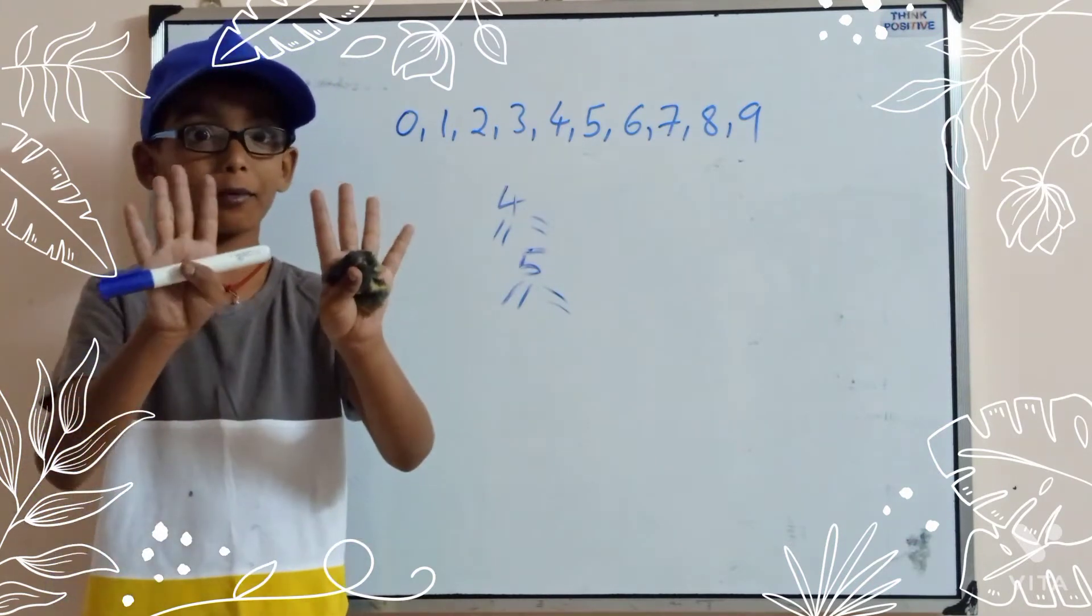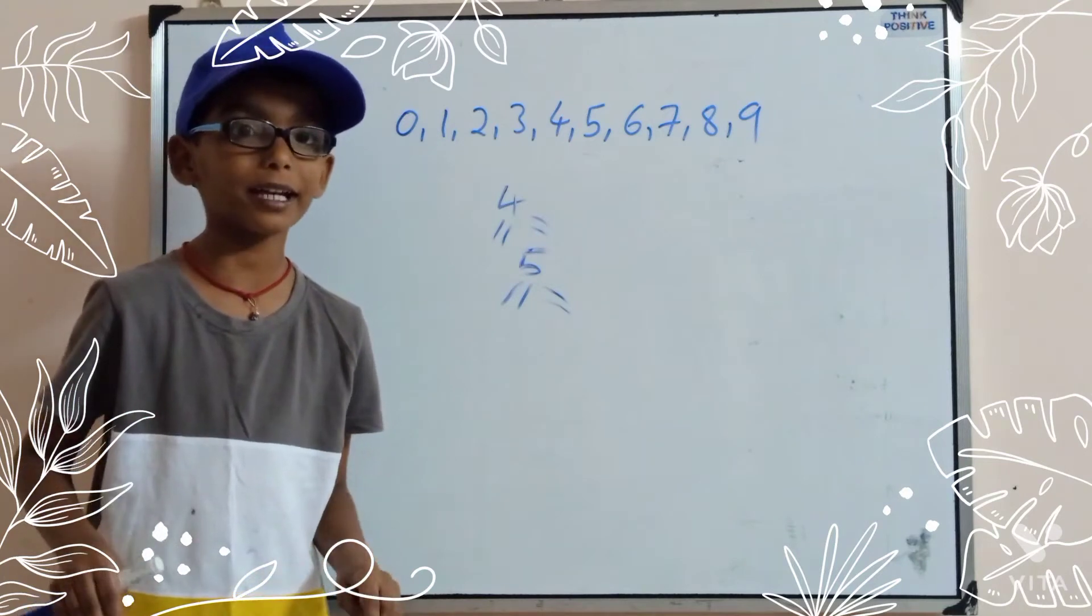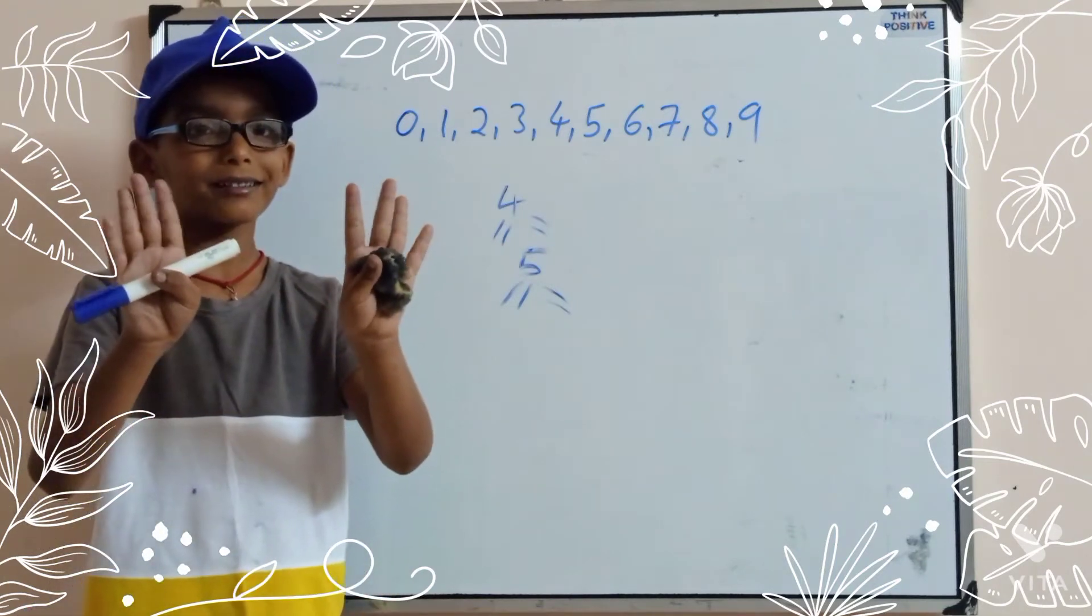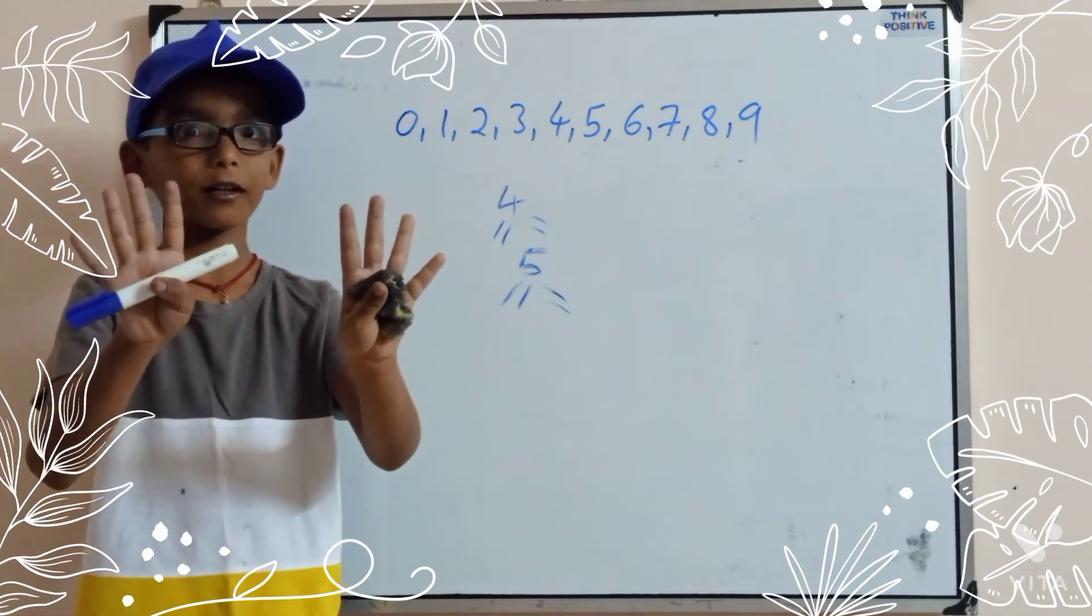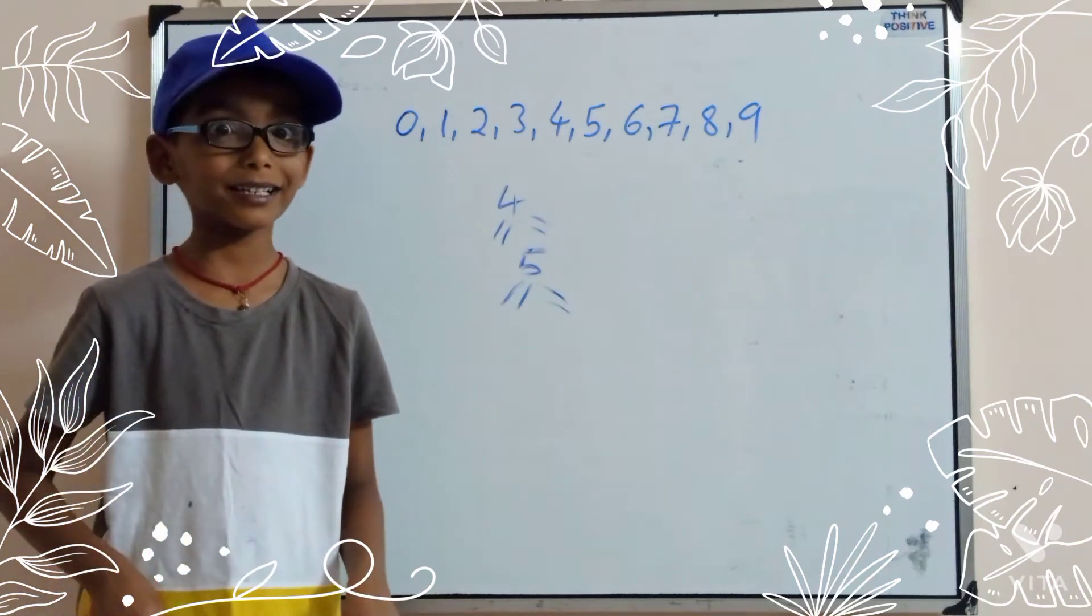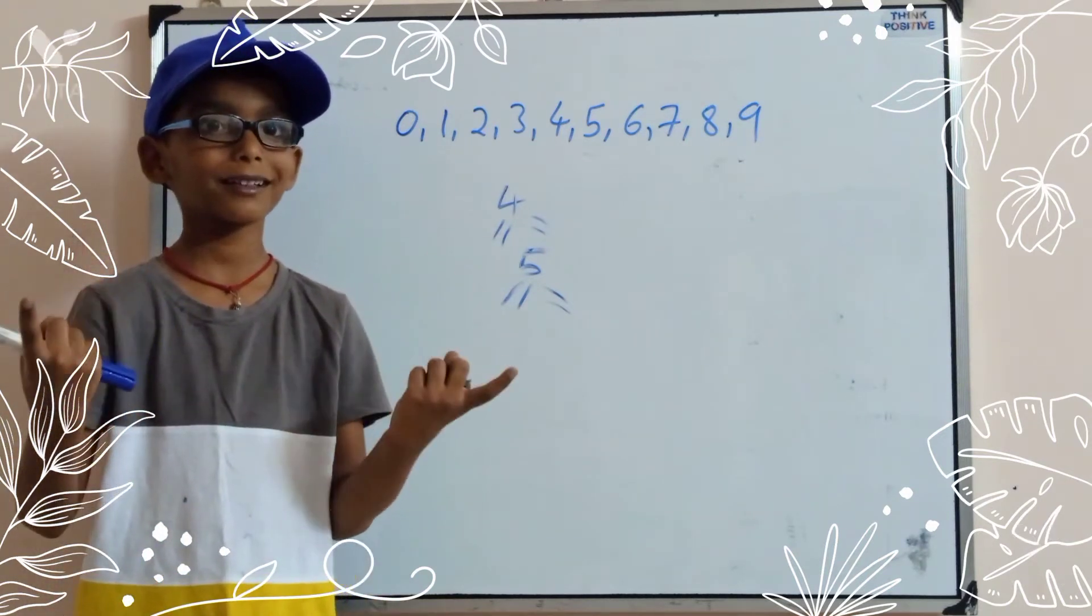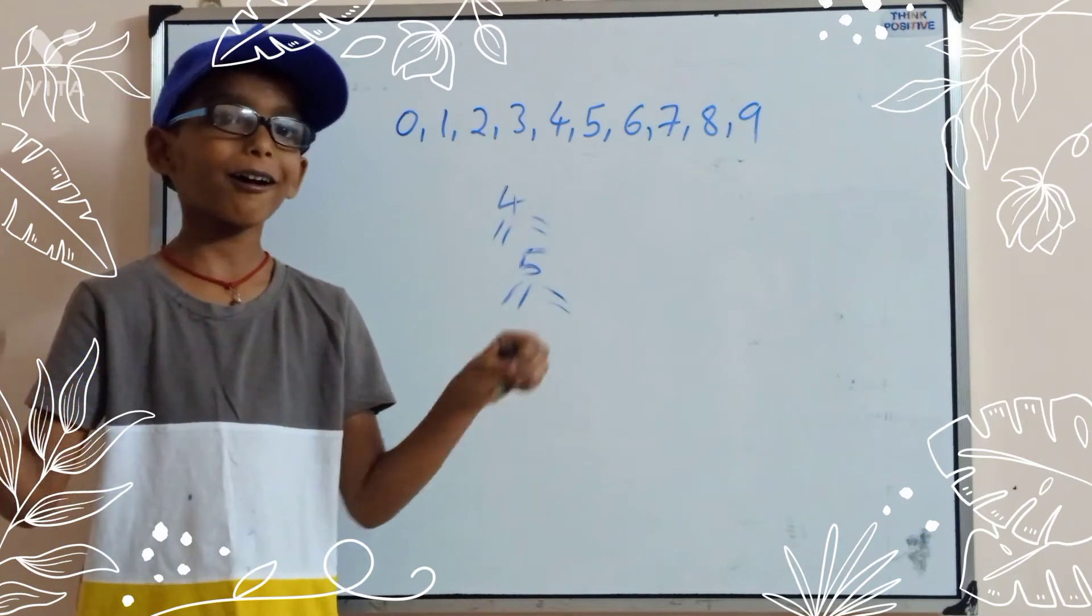Even numbers like 4, 8. Suppose 8, we can share 4 and 4. But 3 is 1, 1, and 1 is left. So, odd number.